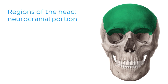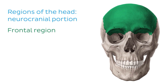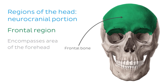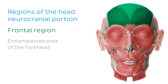The neurocranial regions are named according to the underlying bones, with the exception of the auricular region which we'll discuss later. The first region is the frontal region, situated at the front of the head overlying the frontal bone and encompassing the area of the forehead. Looking at another illustration, we can see the frontalis muscle highlighted in green is also found in this region.